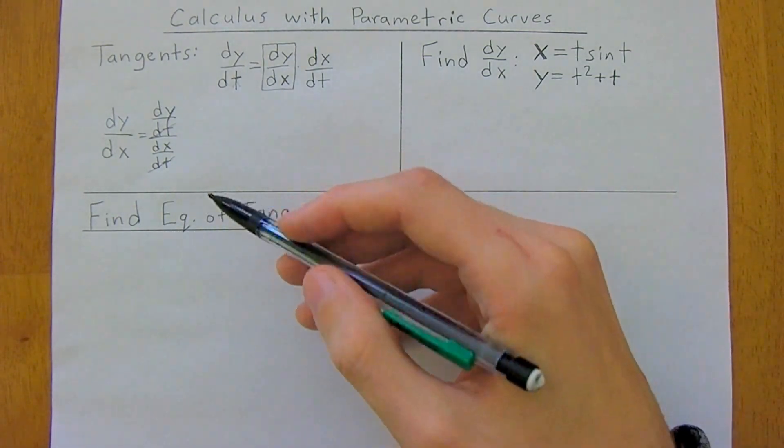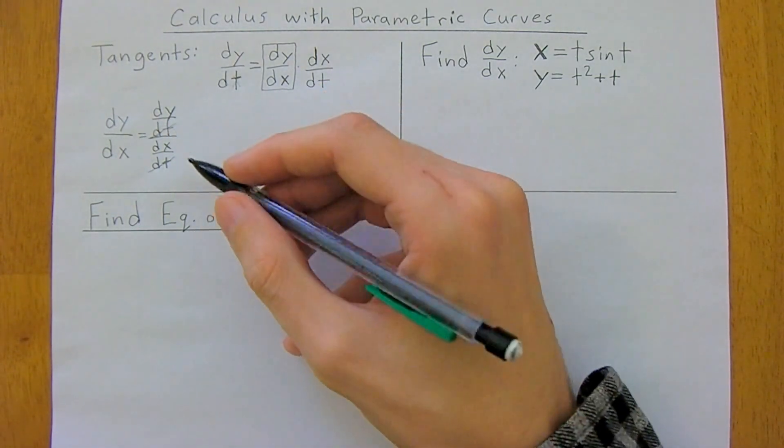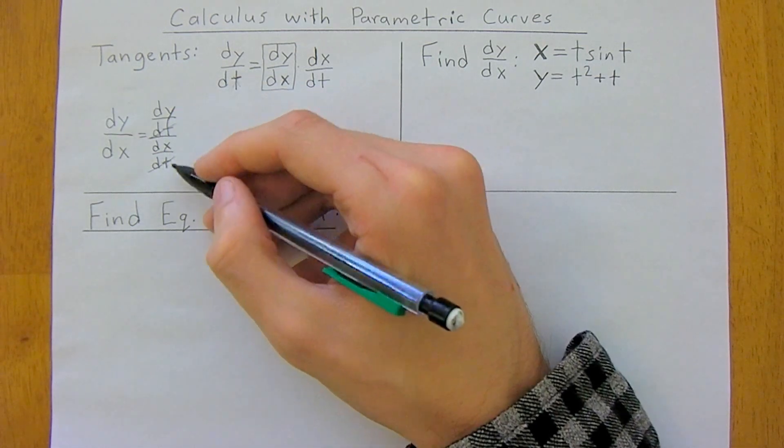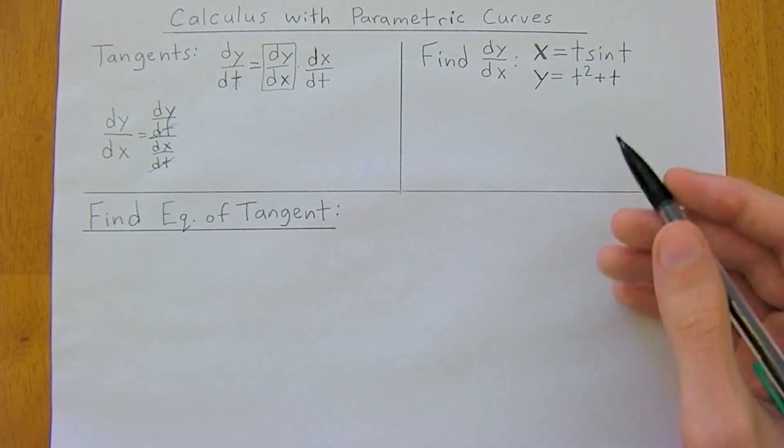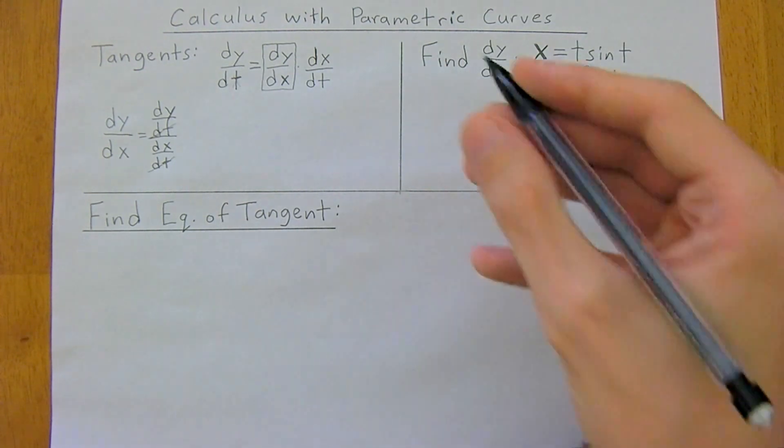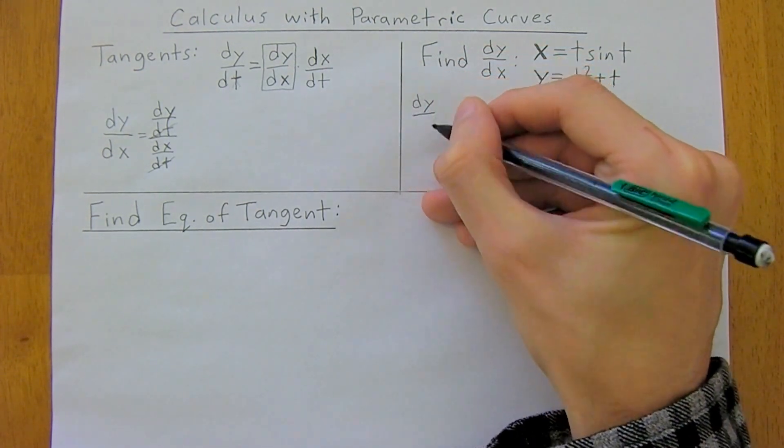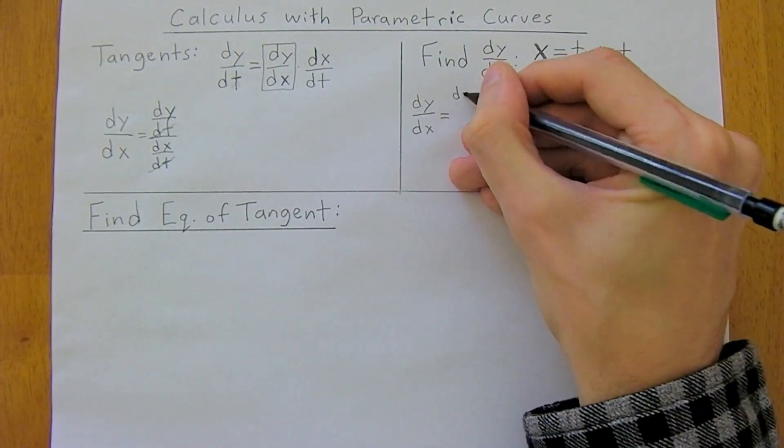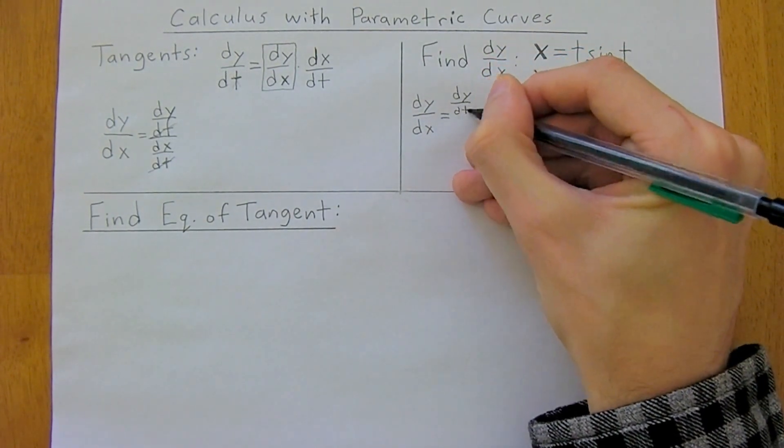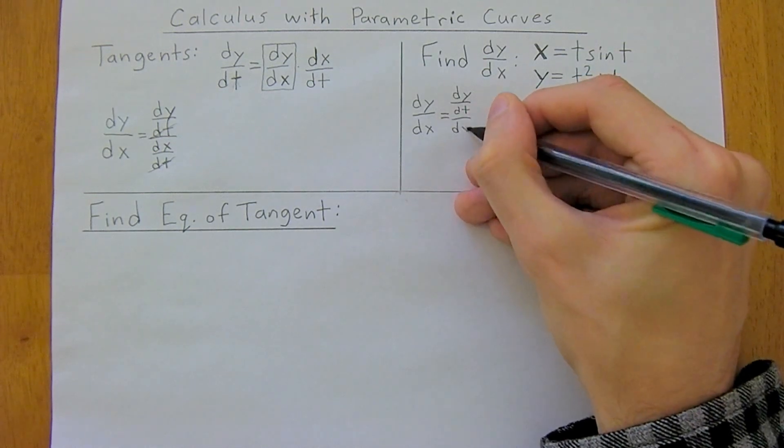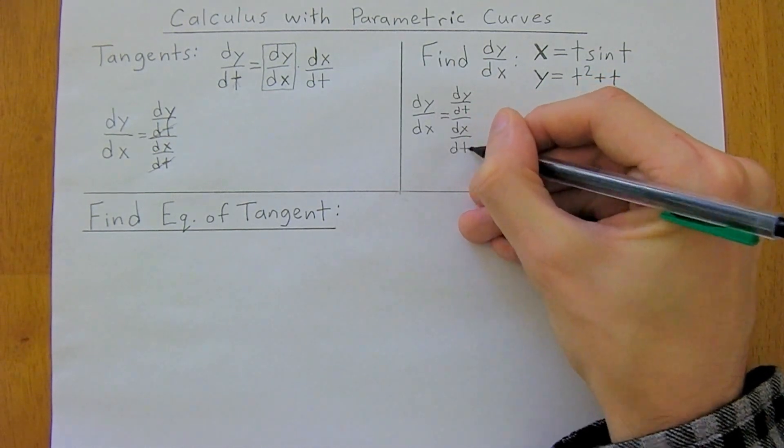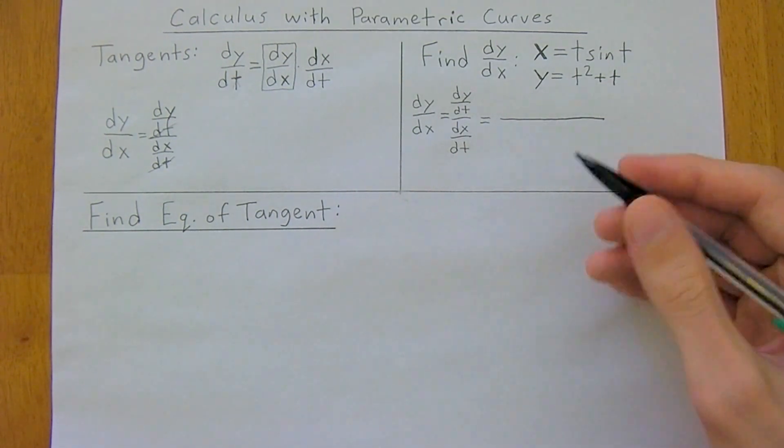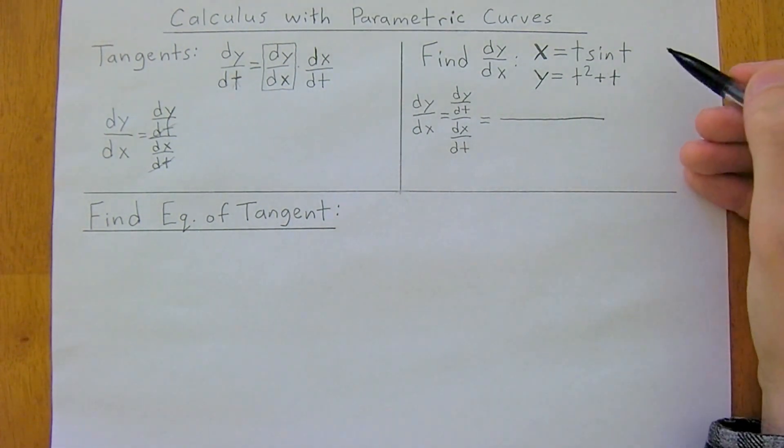And I should also point out that, in this case, dx over dt cannot be zero because you can't divide by zero. But okay, so let's do a simple example. So dy over dx is equal to dy over dt divided by dx over dt. So now, we just need to take two derivatives, essentially.